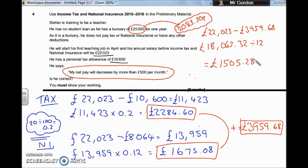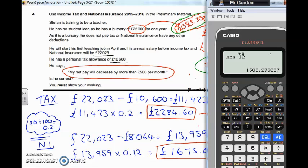So is he worse off? Here are the monthly figures to compare — his bursary monthly income and his teaching monthly income. Is there a difference of £500? Just by looking at it you can probably see there is. To be sure, let's do it on the calculator: £2,083.30 minus £1,505.28. That shows quite clearly — we're actually £578 worse off.